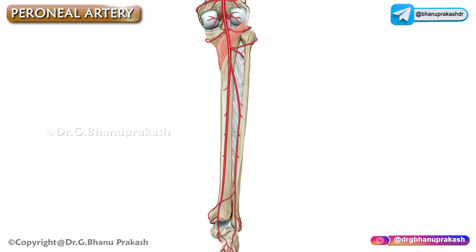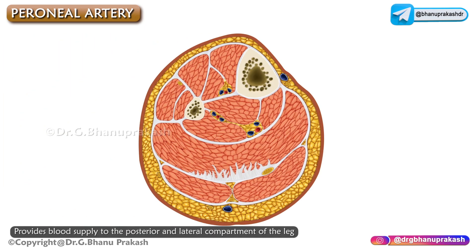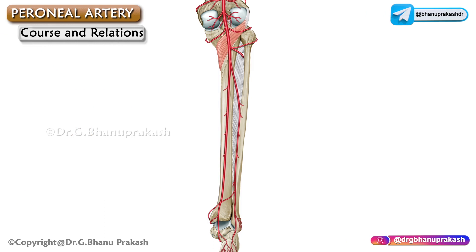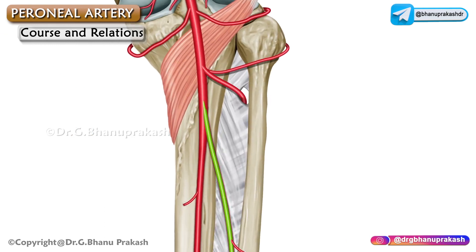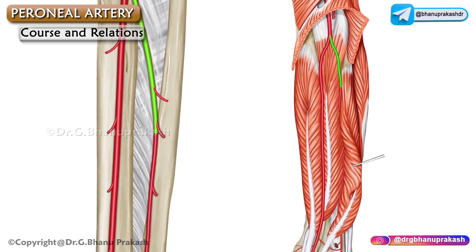The peroneal artery is the largest as well as the very important branch of the posterior tibial artery. It provides important vascular supply to the posterior as well as lateral compartments of the leg. Regarding its course and relations, as you can see in this picture, it arises 2.5 centimeters below the lower border of the popliteus muscle, after which it turns obliquely towards the fibula and descends along the medial crest of the fibula.